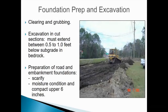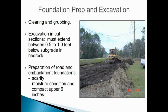Before we ever begin to build a road or embankment, the first thing that has to be done is clearing and grubbing — removing any organic material, trees, shrubs, roots, and topsoil until we get down to native soil with no organic material. If we are in a cut section with cuts in bedrock, we have to extend the cut at least a half a foot to one foot below subgrade in bedrock, and then bring that foot back up to grade with approved fill material before constructing our pavement section.